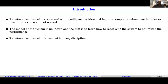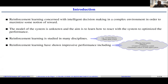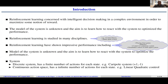Reinforcement learning is concerned with intelligent decision making in complex environments to maximize some notion of reward. The model of the system is unknown, and the aim is to learn how to react with the system to optimize performance. RL has shown impressive results in Atari games, robotics, control of continuous systems, and distributed control of multi-agent systems. Systems may be discrete — with a finite number of actions like the cartpole — or continuous, like linear quadratic control.